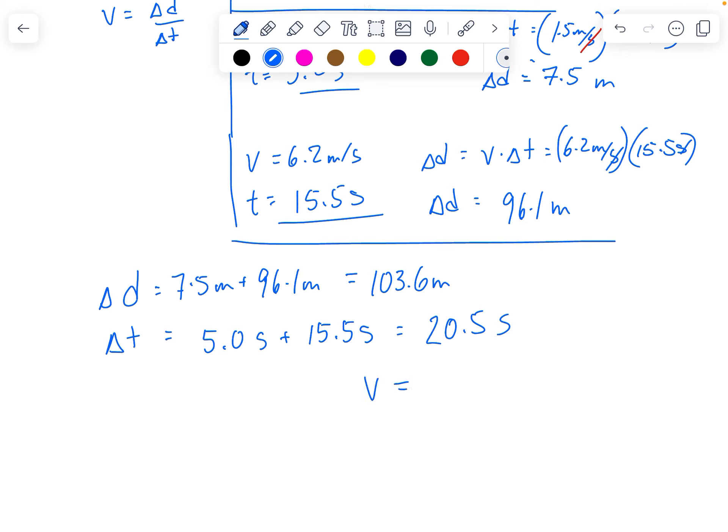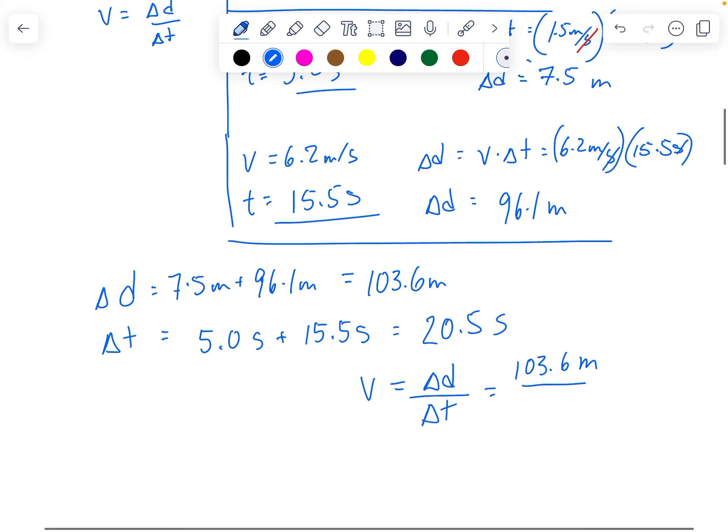So my speed is going to be the change in distance over the change in time. And the guy, Max Planck, goes 103.6 meters divided by 20.5 seconds. And that goes 5.0536 meters per second.